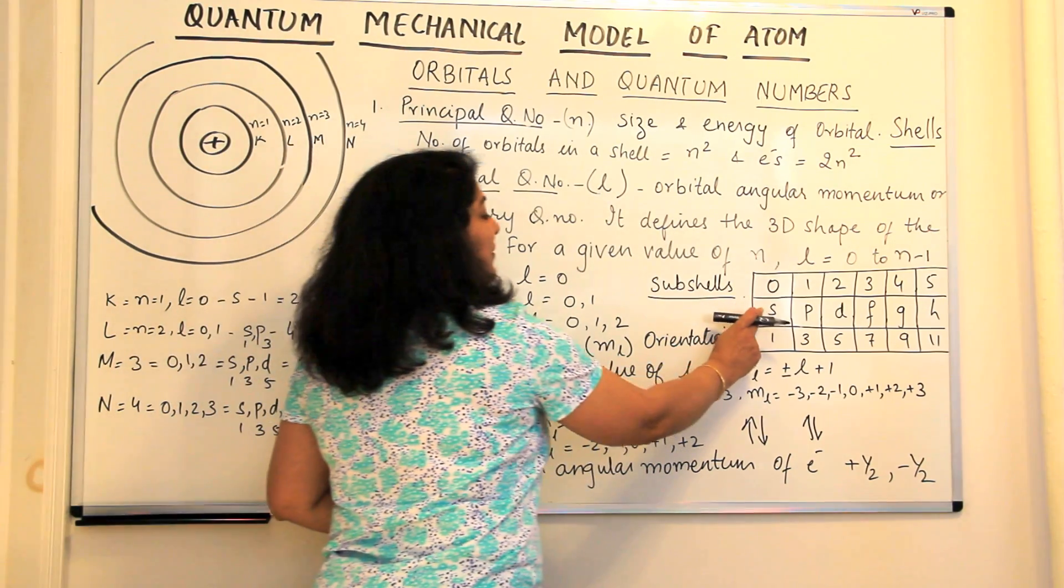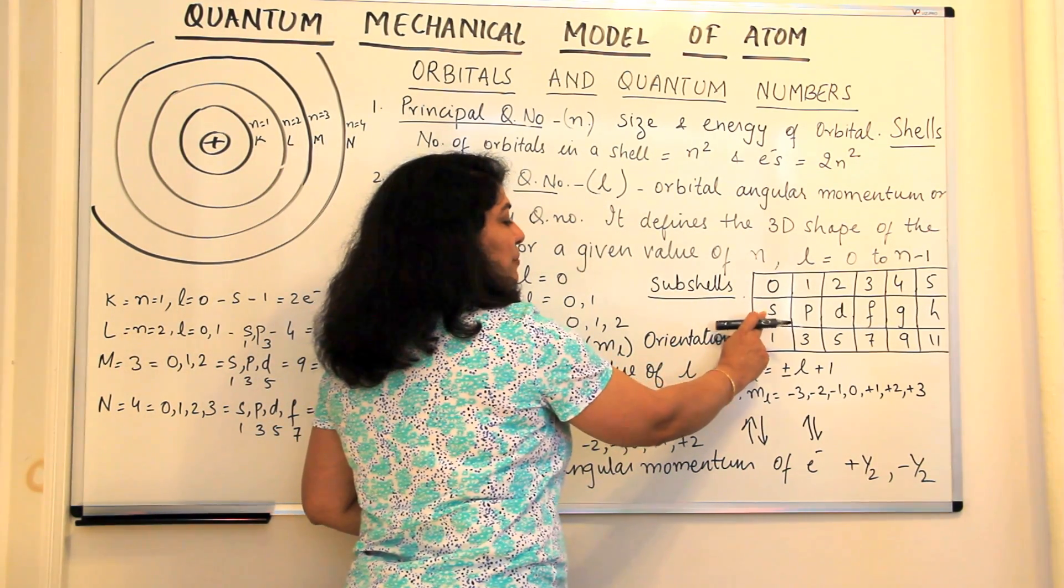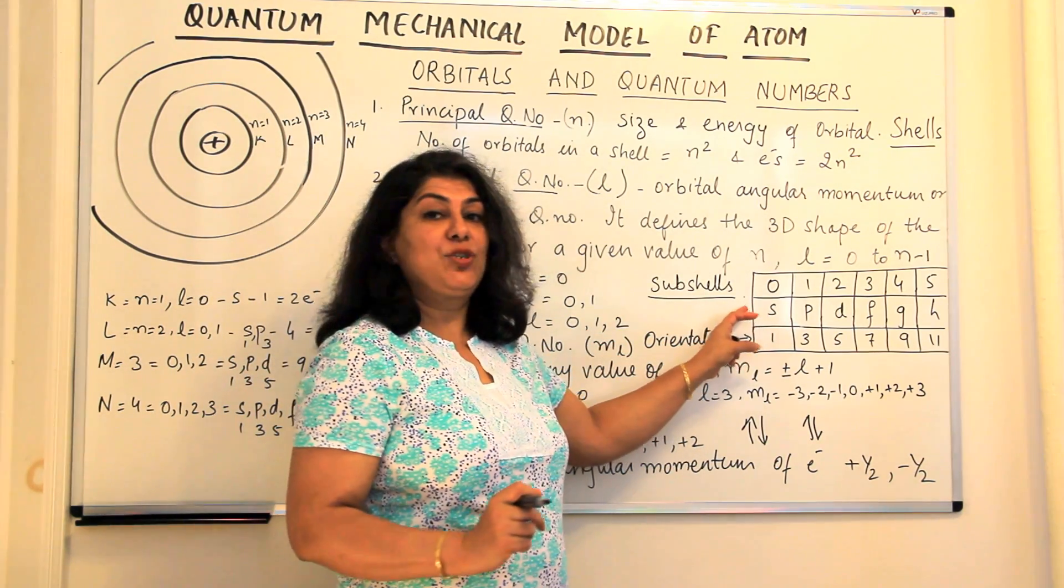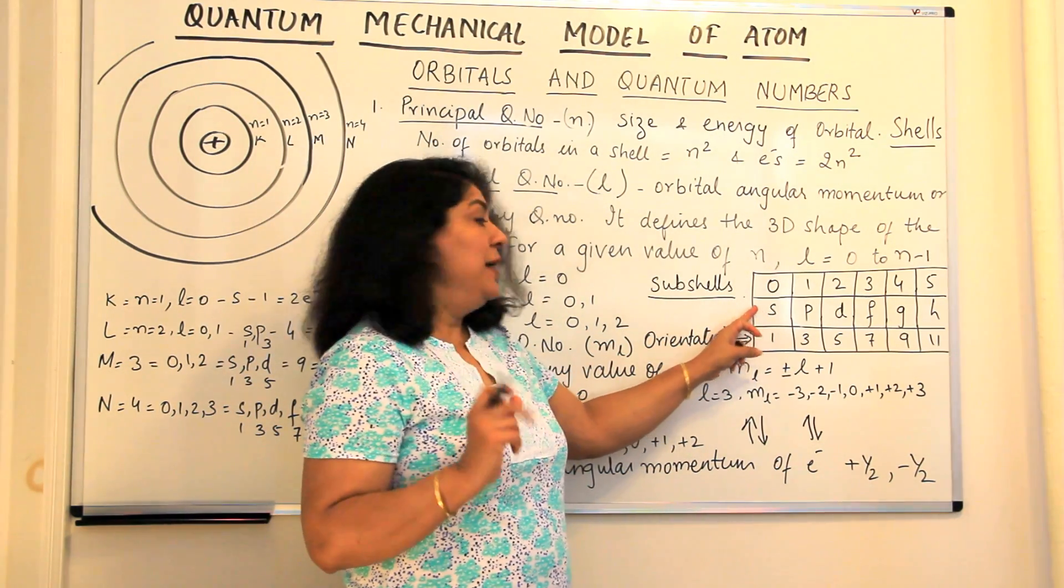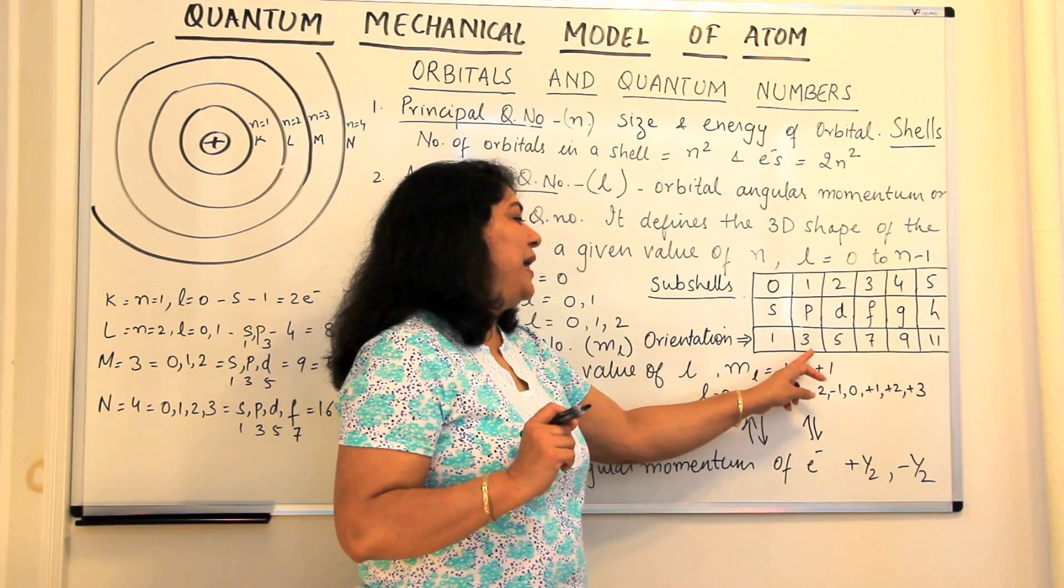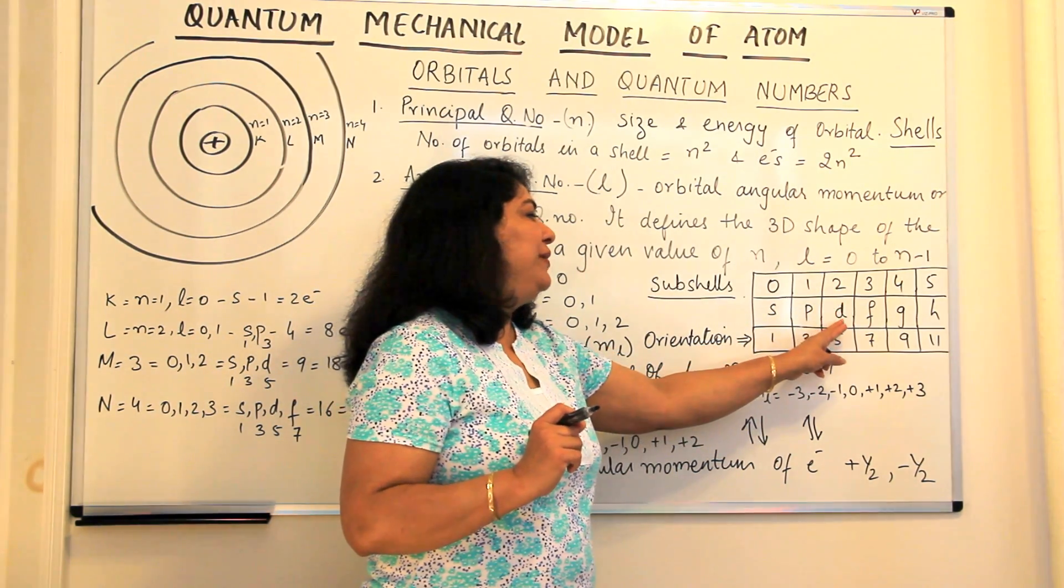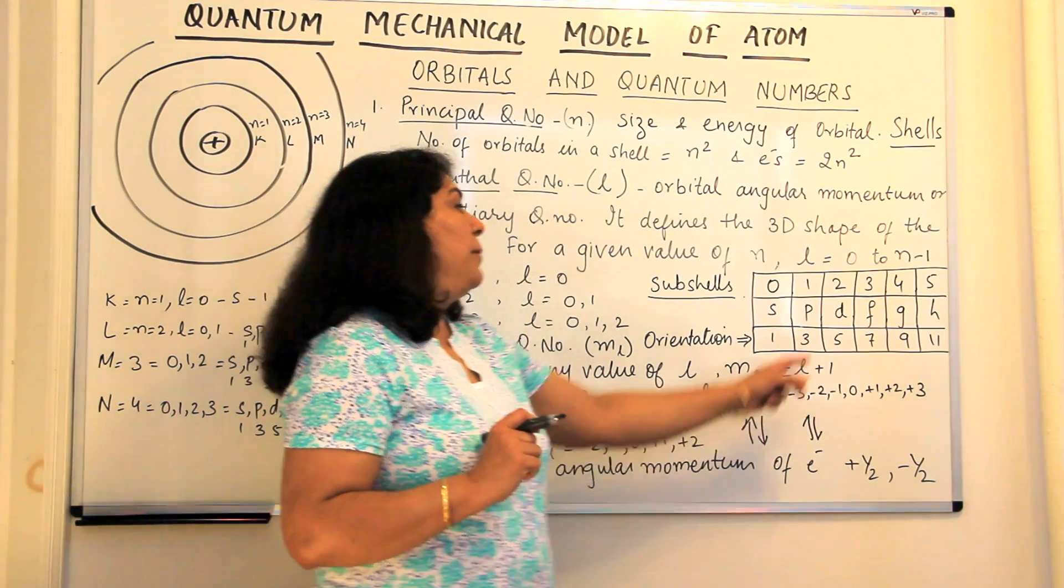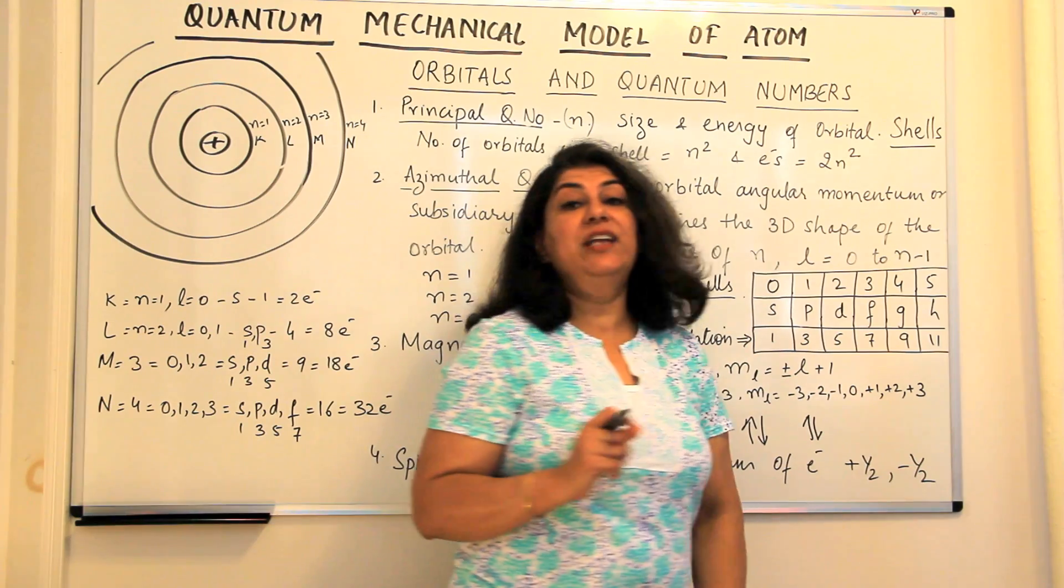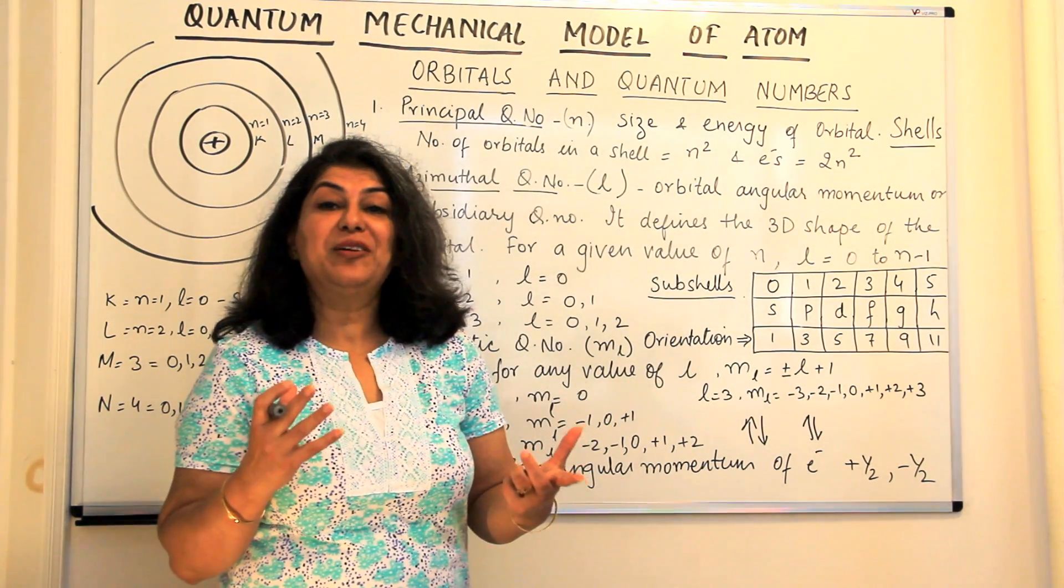Now, do you see, if this is the subshell, it has only one room or this is the apartment, all apartments with the S type have only one room. All apartments which are of the P type have 3 rooms. Apartments of D type have 5 rooms. Apartments of F type have 7 rooms. G is 9 and H is 11.